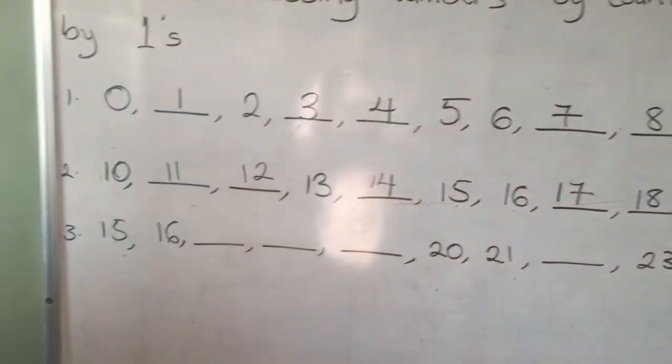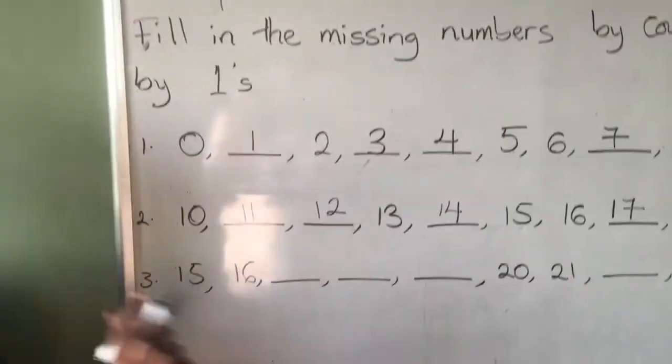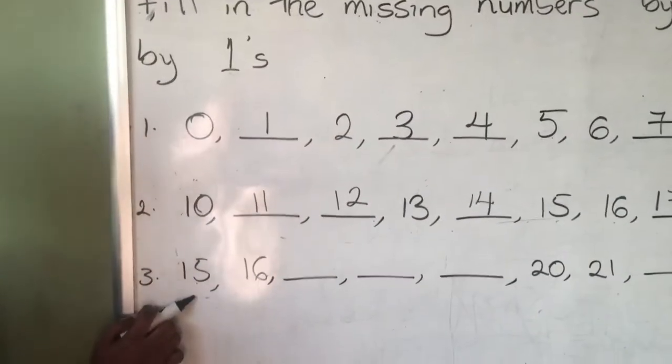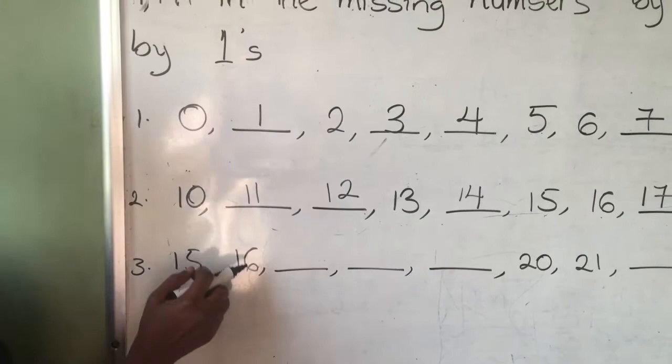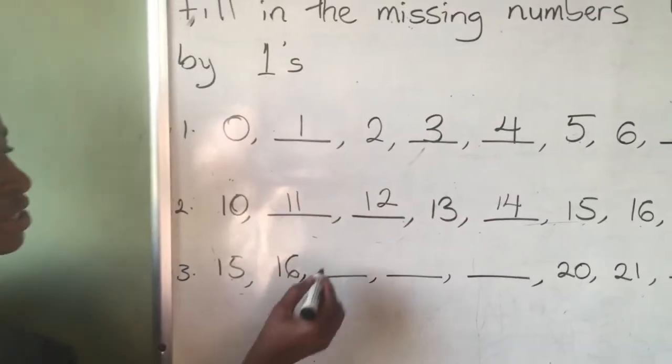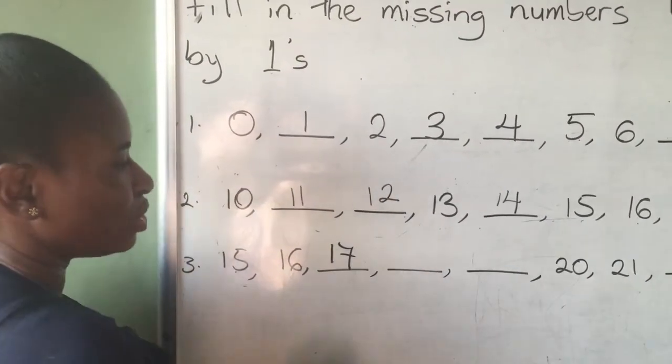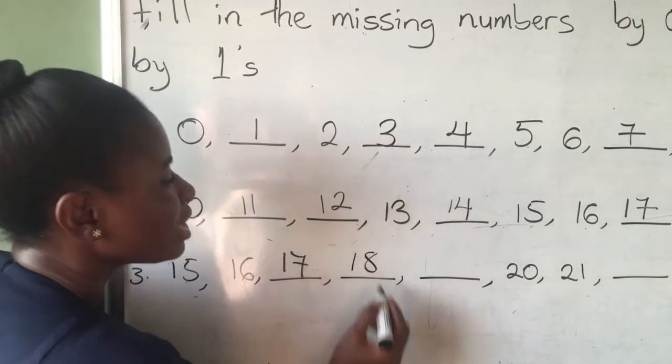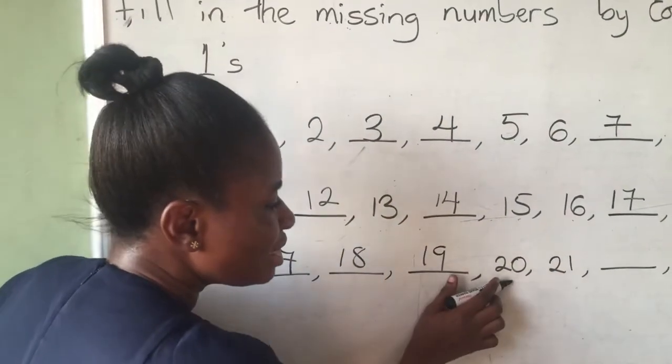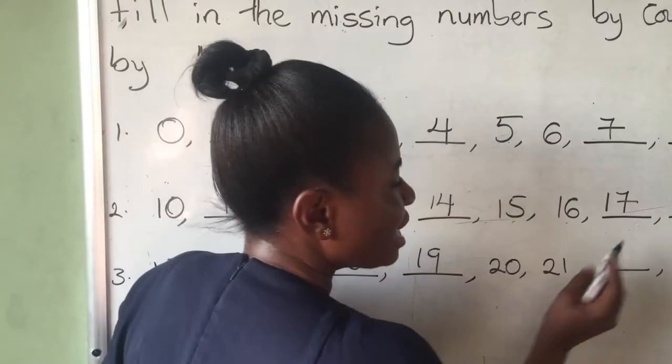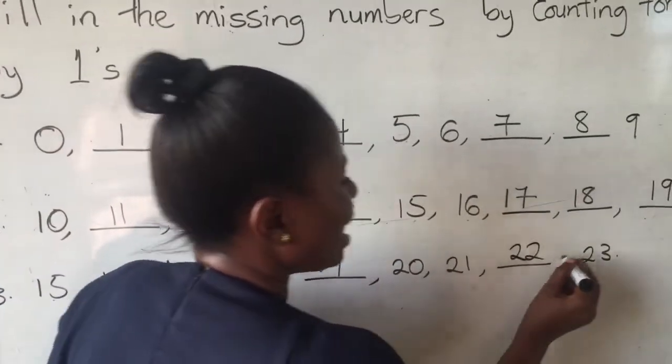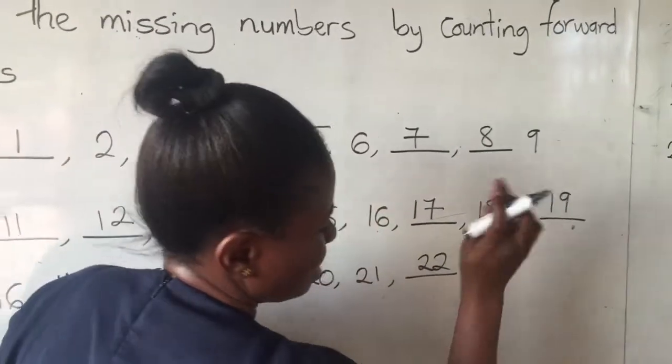Let's look at example 3. Example 3 started from 15. From 15, we move on to what? 16, and then 17. Good. 18, 19, 20, 21, 22, and then it ended at what? 23.